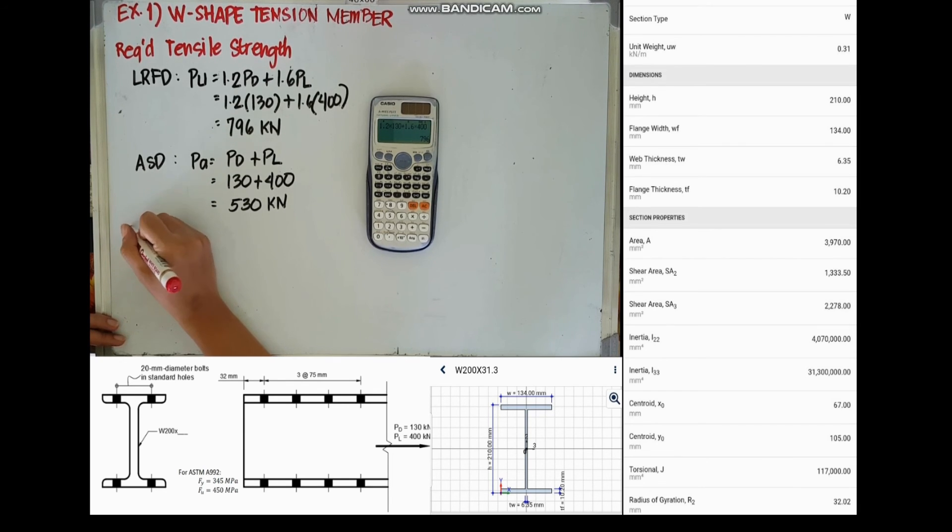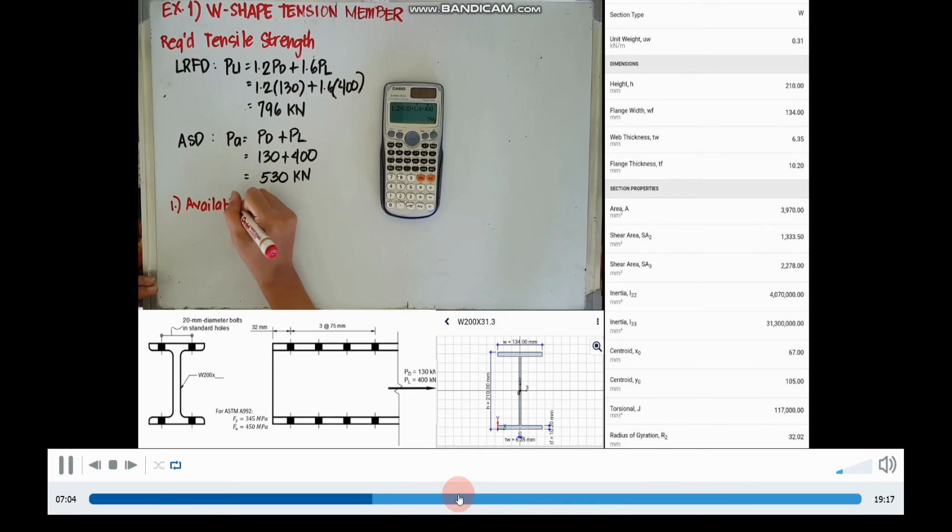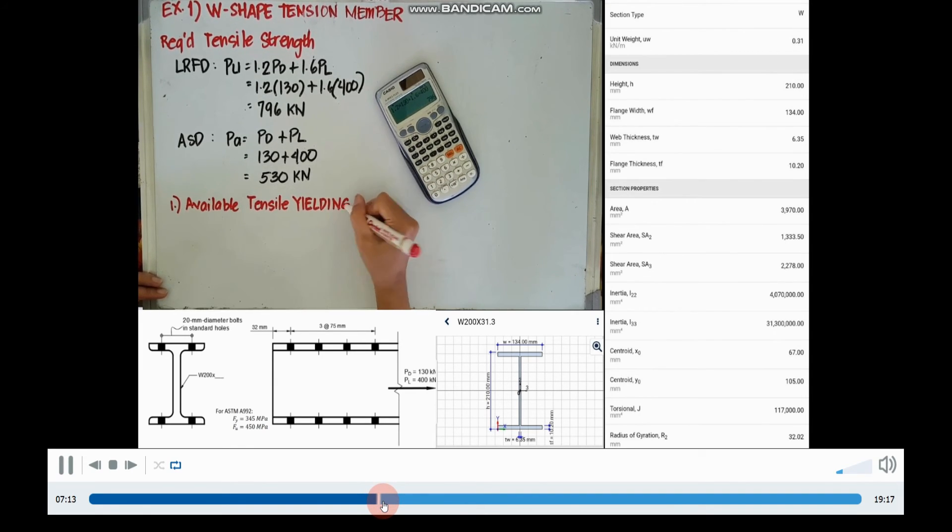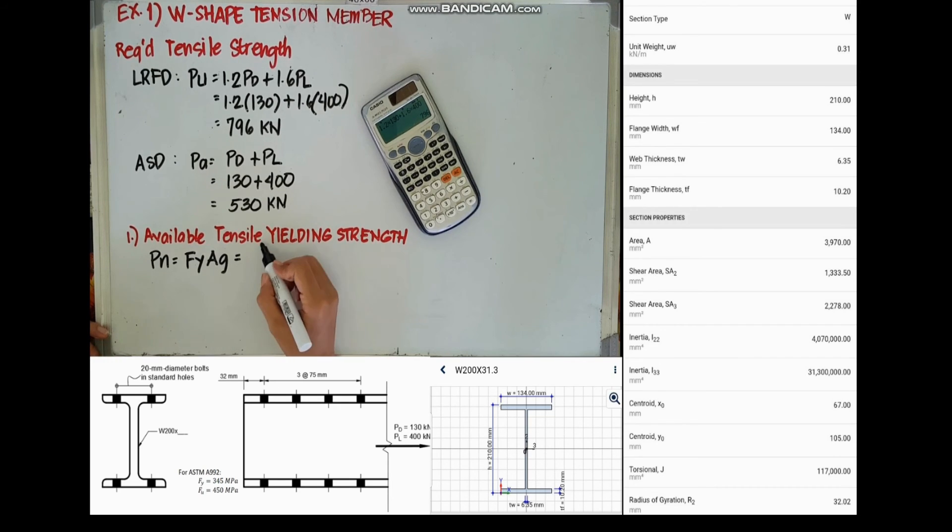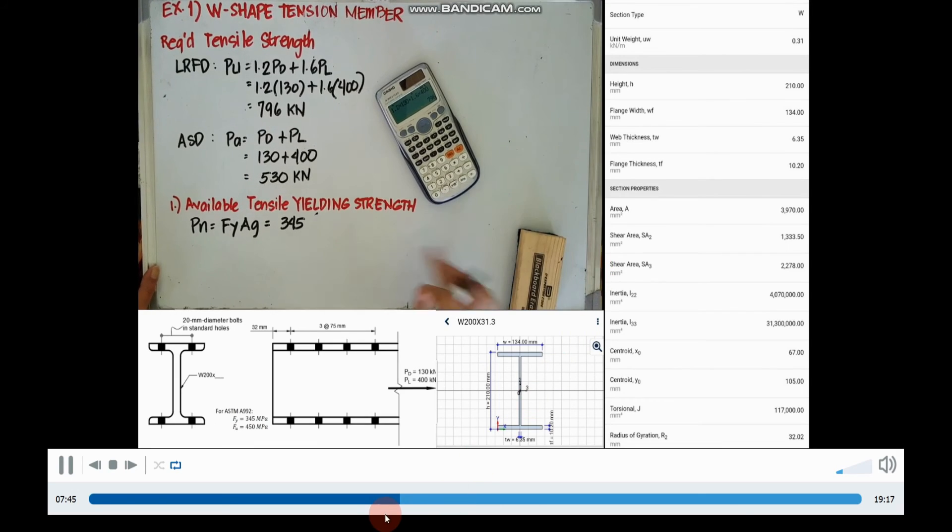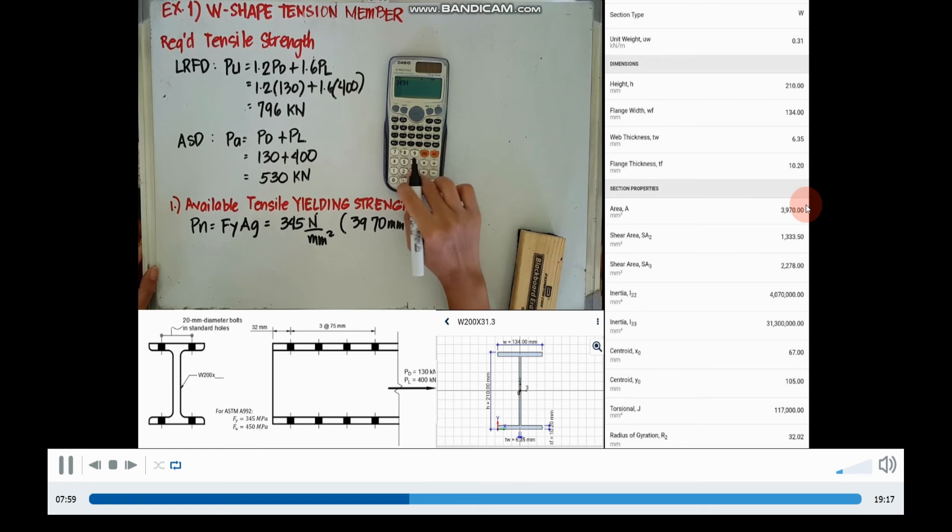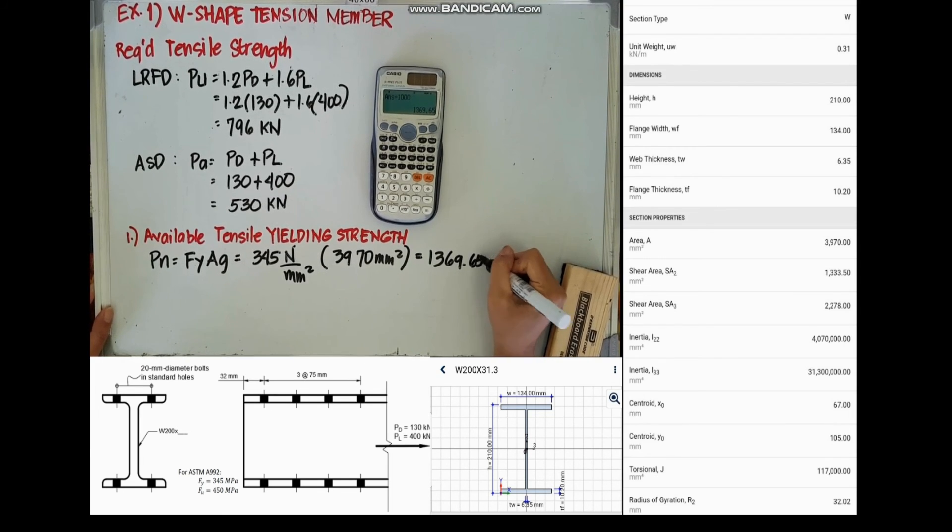We are now ready to determine the available tensile yielding strength. For available tensile yielding strength, Pn is equal to Fy multiplied by the gross area. Our yield stress is 345 N/mm² multiplied by the gross area which is 3970 mm². Multiplying the two, we have 1369.65 kN.